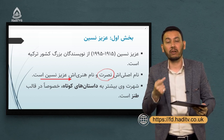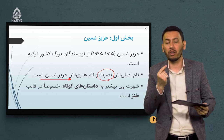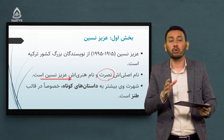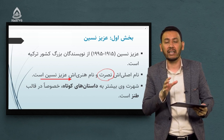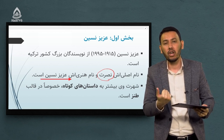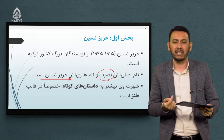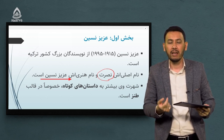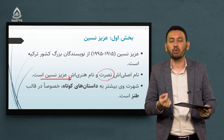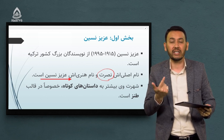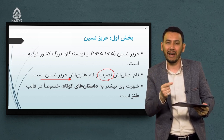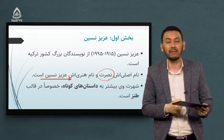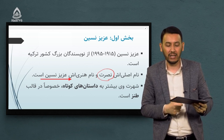چرا میگویند عزیز نسین؟ «عزیز» نام پدر ایشان است. نام خودش «نصرت» است و نام پدرش «عزیز» است. به خاطر آن نزدیکی، به خاطر آن قرابت و دوست داشتن بیش از حد این نویسنده و پدرش، نام خود را «عزیز» میگذارد. «نسین» یک واژه ترکی است به معنای «تو چه کاره‌ای، تو چه چیزی هستی» که معنای طنز در پسوند «نسین» نهفته است.